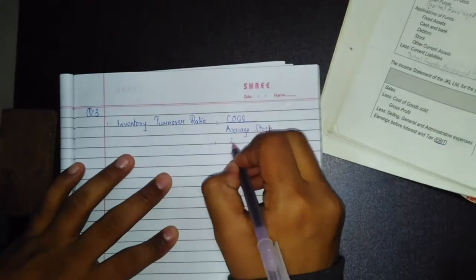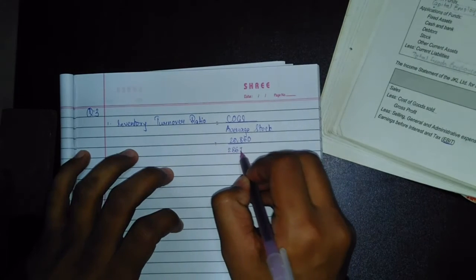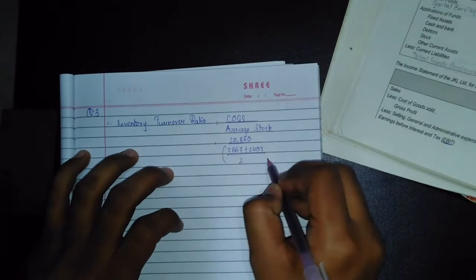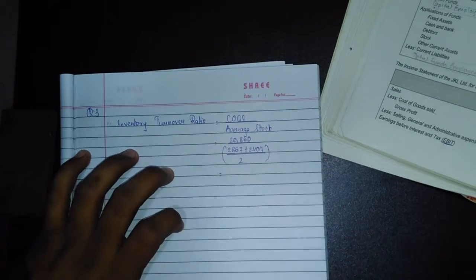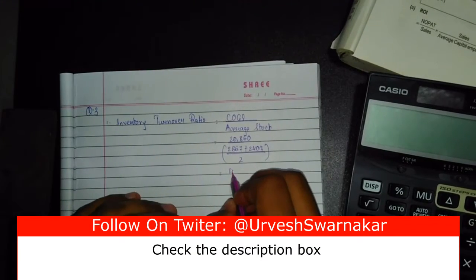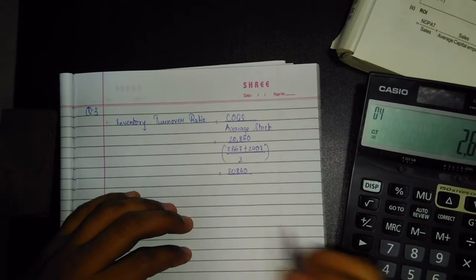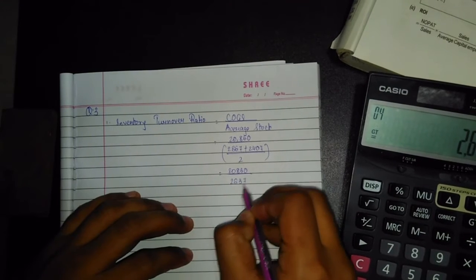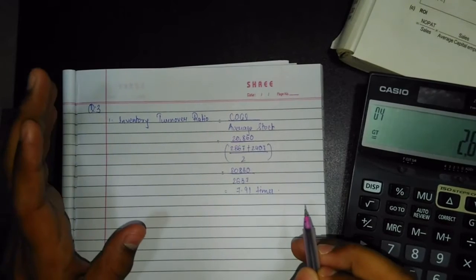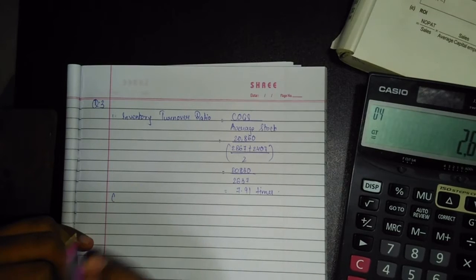COGS is equal to 20,860. Average stock is equal to 2,867 plus 2,407 — this is given in the question. So: 20,860 divided by (2,867 plus 2,407) divided by 2, which equals 2,637. The final result is 7.91 times. Write an important note here — this is for your own benefit.